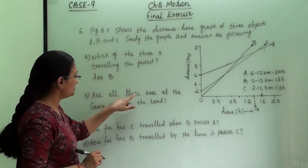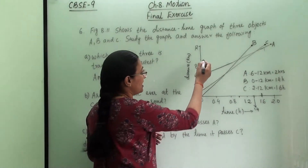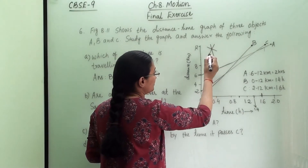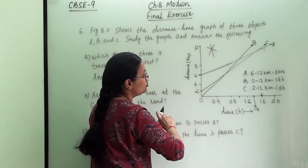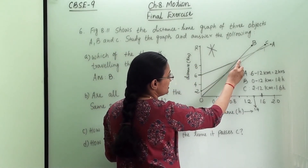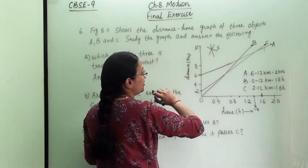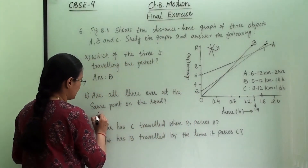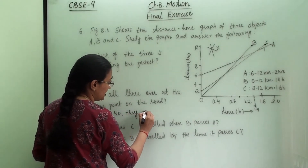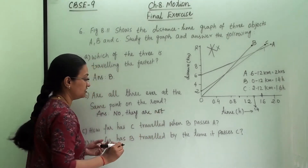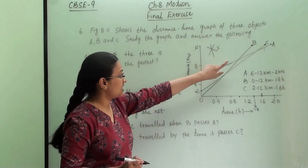The second question asks: are all three ever at the same point on the road? Looking at the graph, two objects cross each other at various points, but all three lines never intersect at a single common point. So the answer is no — all three are not at the same point at any time, only pairs of objects cross each other.